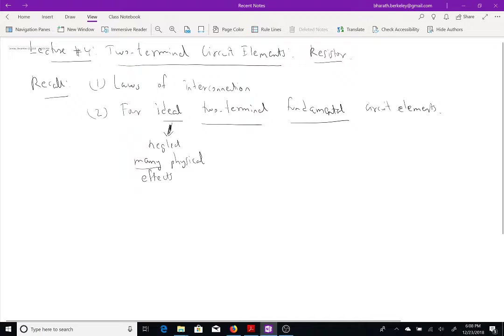So for example, we will assume when we have an independent source, as we're going to talk about in this lecture, like a battery, we'll assume that the battery is ideal. That is, it can put out like, let's say if it's a five volt battery, it can put out five volts always, even if you draw like a million amps from it.